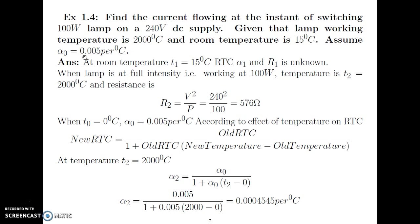Now, alpha0 is given at 0 degree Celsius. We first determine alpha2, the RTC at T2 equal to 2000 degree Celsius. Using the formula — new RTC equals old RTC divided by 1 plus old RTC times (new temperature minus old temperature) — alpha2 equals alpha0 divided by 1 plus alpha0 times (2000 minus 0). Substituting alpha0 equal to 0.005 and T2 equal to 2000, we get alpha2 equal to 0.00045454 per degree Celsius.